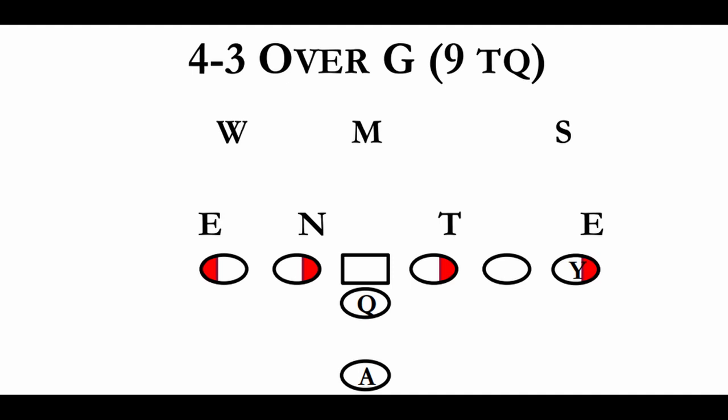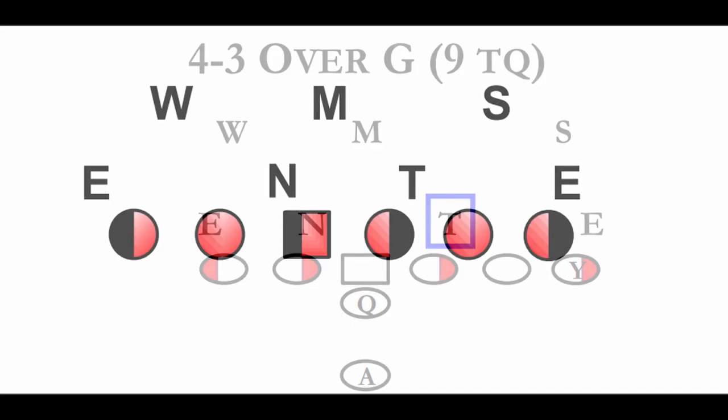The 4-3-over puts its three-technique, or B-gap player, to the strength of the offensive formation. As a result, the one technique, or shade, is to the open or weak side of the formation. The alignment of the front helps keep the strong side linebacker clean to make plays.